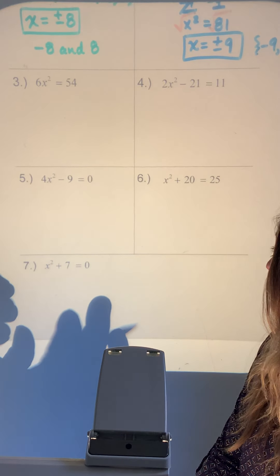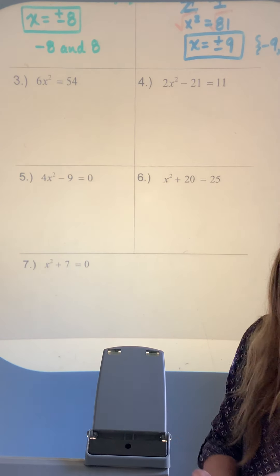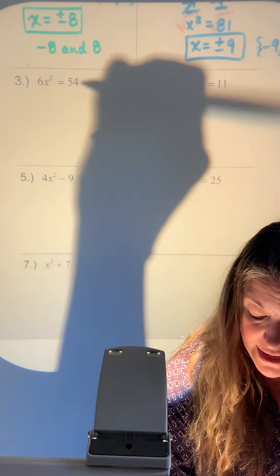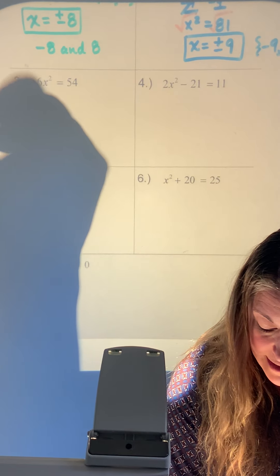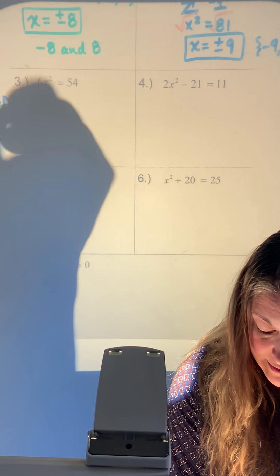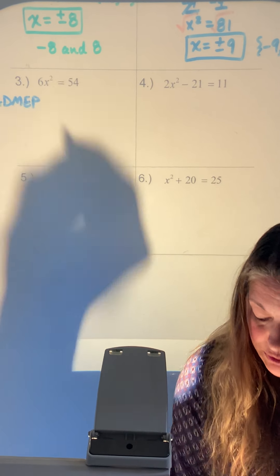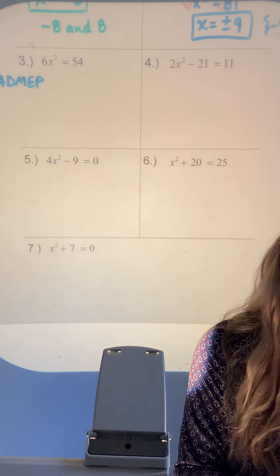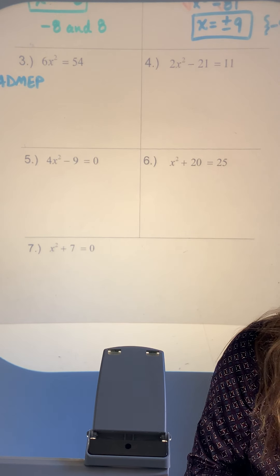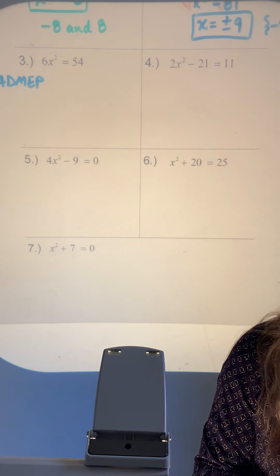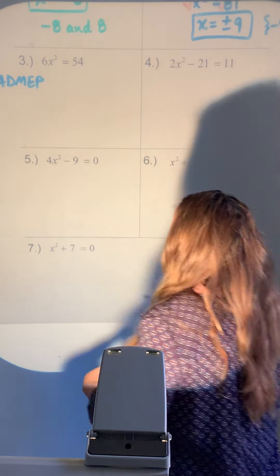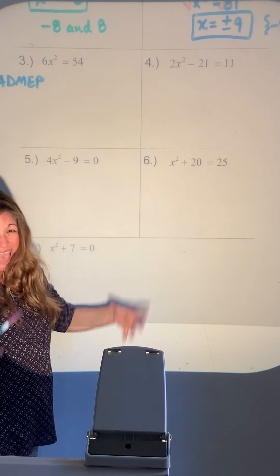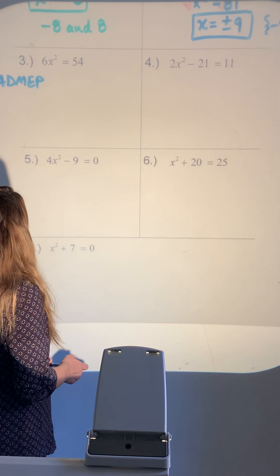For number 3, I'll write SADMEP on the side to remind me to get x squared alone in the proper order.